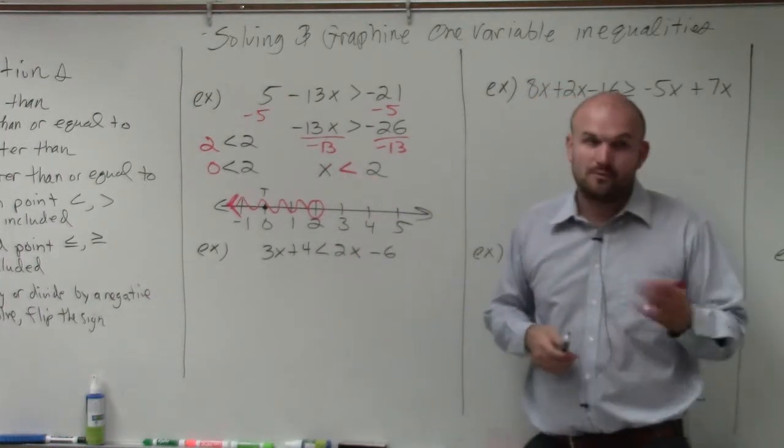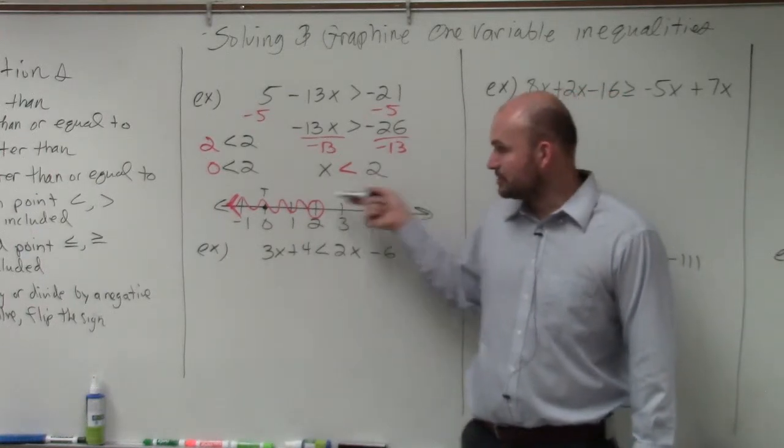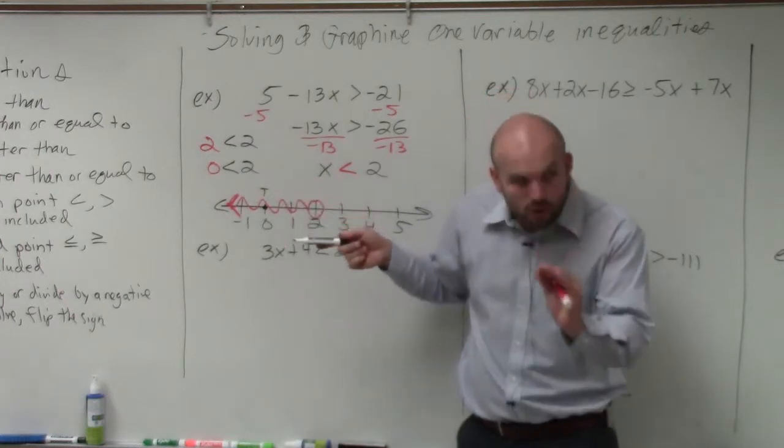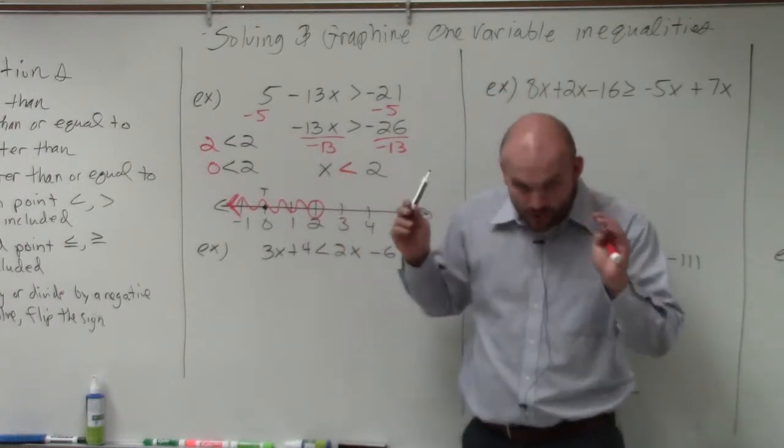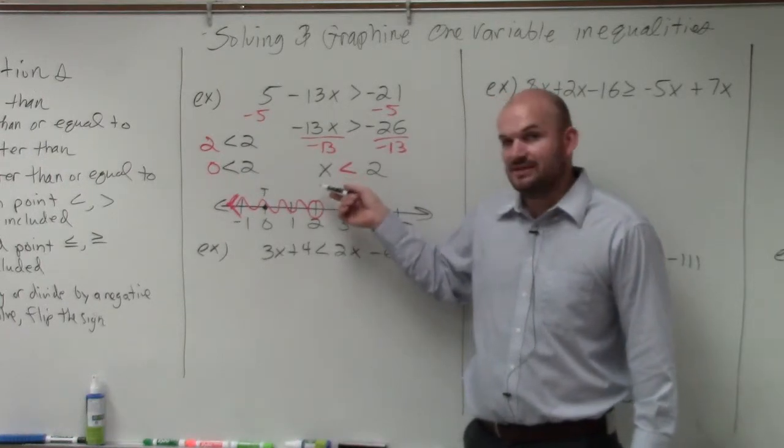Another easy way that works but also cannot work is looking at the inequality symbol. The inequality symbol is going to show you where to shade, but only when the variable is on the left-hand side.